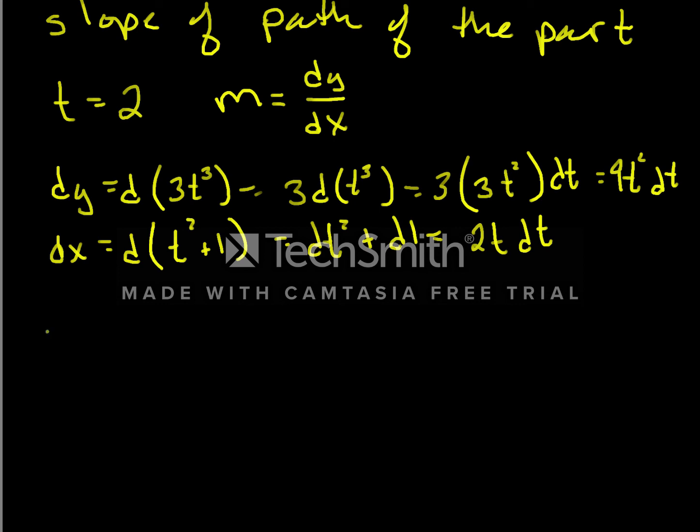So then our slope is the ratio of those two differentials. So our slope m, which is dy/dx, which is 9t² dt divided by 2t dt. And we see that our differentials of t, they cancel out, and we get simplification here. And so the differential of y with respect to x is equal to 9/2 t.